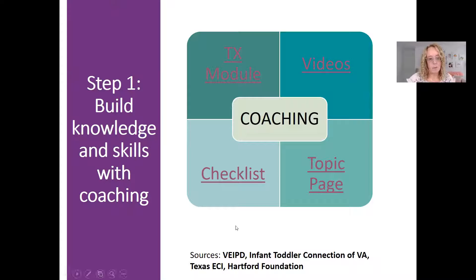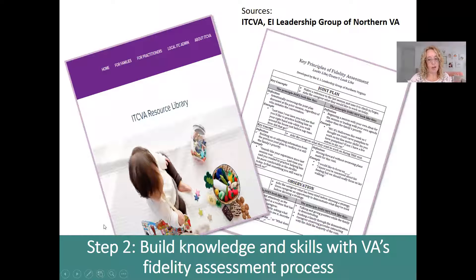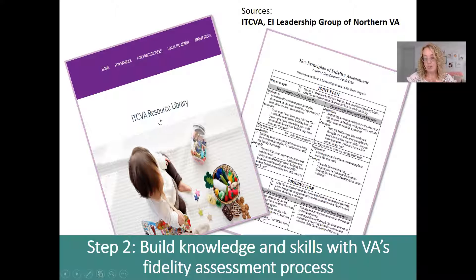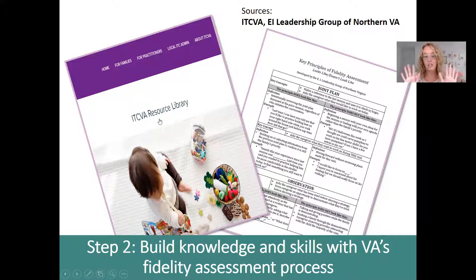That's step one — building coaching knowledge and skills. Once you feel confident that a potential fidelity observer has a good foundation in coaching, next we want them to build their knowledge related to Virginia's fidelity assessment process. Different states have different processes, so especially if someone moves from another state, we want to get them grounded in Virginia's approach. Two good resources here: the Infant and Toddler Connection of Virginia resource library, and a handout called Key Principles of Fidelity Assessment developed by the EI Leadership Group of Northern Virginia.